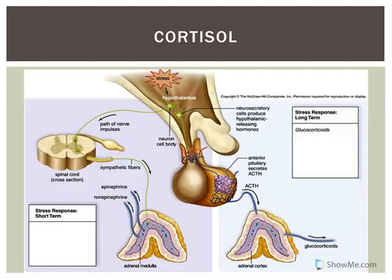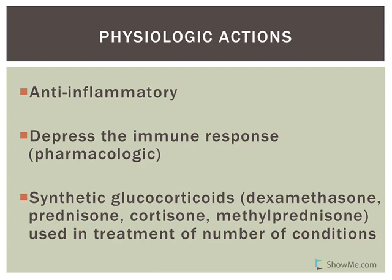Now let's look at cortisol, which is a glucocorticoid. It is often referred to as a stress hormone — more specifically a long-term stress hormone. Its main job is to ensure you have adequate levels of glucose for energy to deal with stress. One of its targets is immune cells — cortisol is anti-inflammatory, keeping inflammation in check. While inflammation is a good thing, we don't want excessive inflammation, so cortisol helps dampen it.